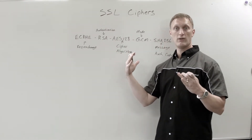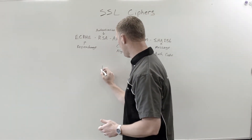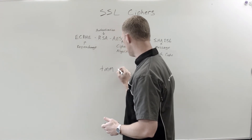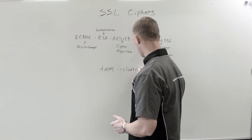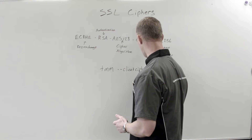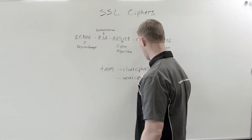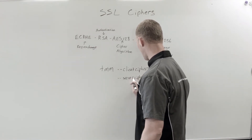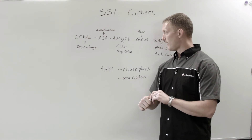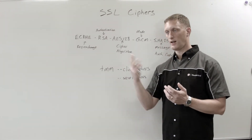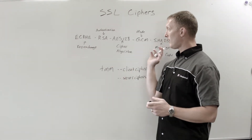If you want to know all the different options on your Big IP, there's a command you can run: 'tmm --client-ciphers' on the client side, and 'tmm --server-ciphers' on the server side. You can run this from the command line and it will list every single cipher available on the Big IP, whether you want to offer it to clients or servers depending on which side you're on.